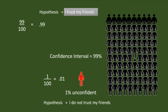That means I do not trust 1% of my friends. This resulted in the emergence of another hypothesis, which states about the absence of trust. As it is talking about the absence of trust, I am going to call it the null hypothesis. But 1% unconfident is not an issue — I trust the majority of them. Hence, I am standing with my statement: I trust my friends.